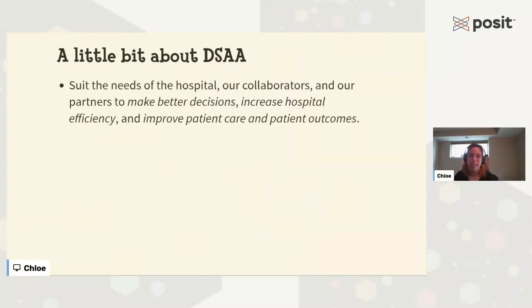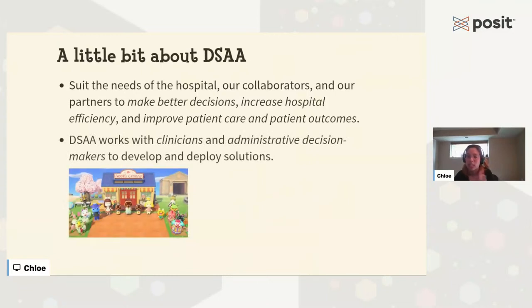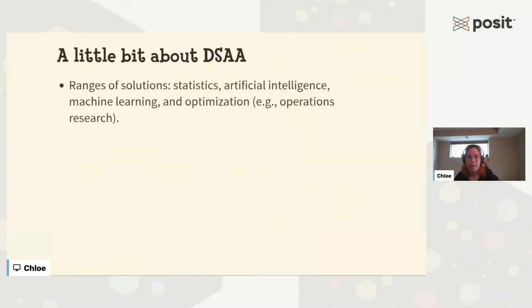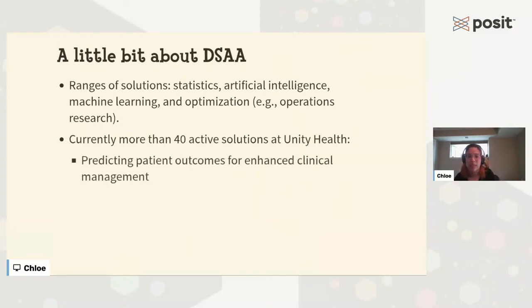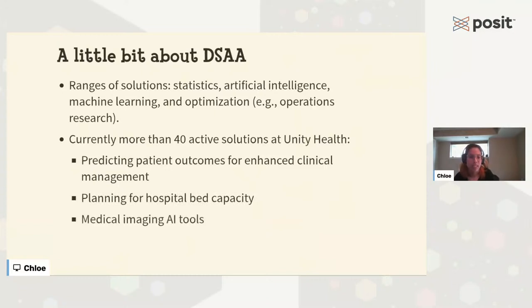What kind of solutions do we work on? A little bit of everything — statistics, artificial intelligence, machine learning, optimization like operations research. Currently we have more than 40 active solutions at Unity Health Toronto. These include solutions for predicting patient outcomes for enhanced clinical management, planning for hospital bed capacity, medical imaging AI tools, and solutions for assignment and scheduling. Here is a screenshot of our COVID dashboard, reporting counts of COVID-positive patients, exposed patients, and those now recovering, across the three different hospital sites that make up our network.